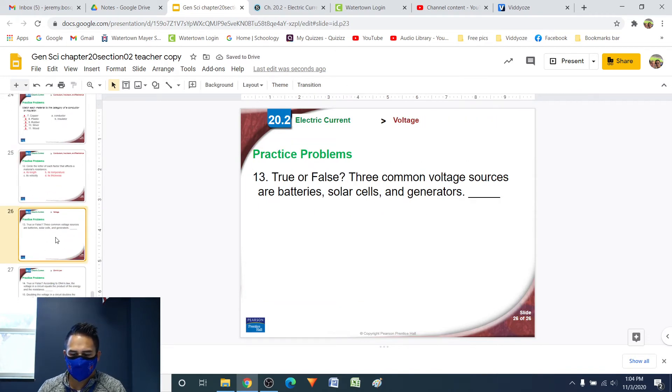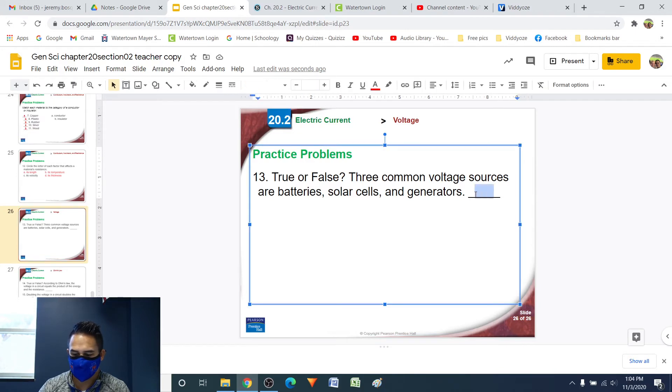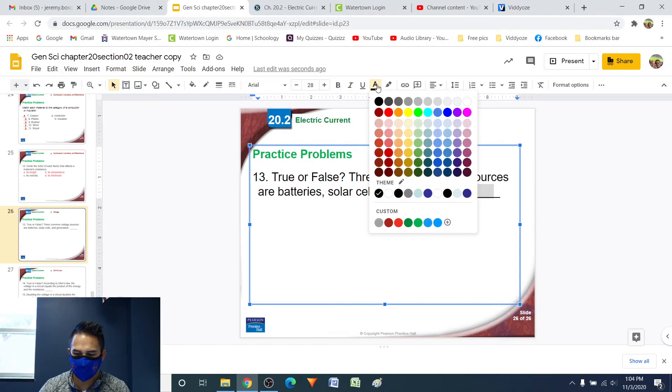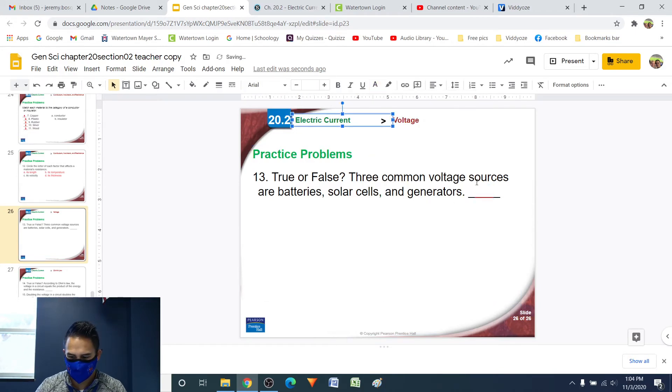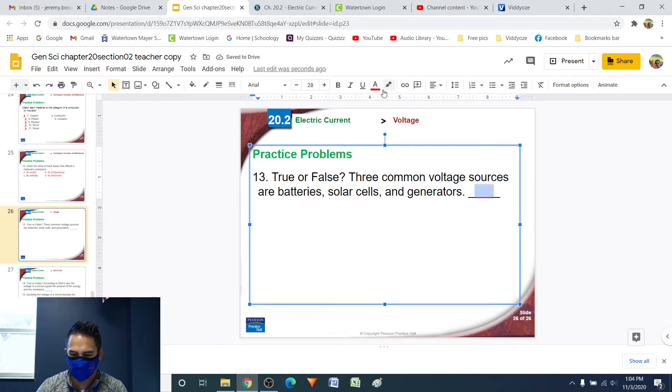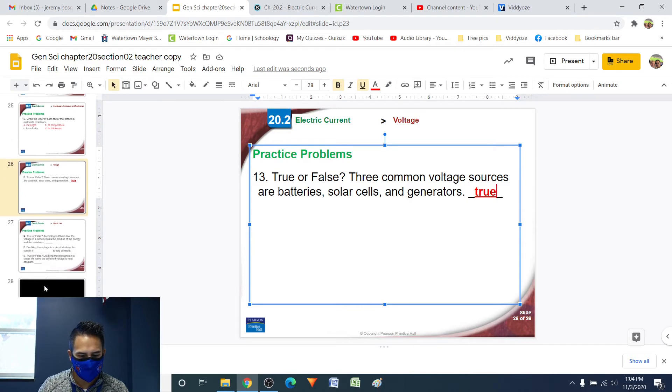Number 13, true or false, three common voltage sources are batteries, solar cells, and generators. So that is directly from the notes. And yeah, that is true. Those are some of the main ways that we can create a voltage is either having some batteries. Solar cells, of course, are going to create energy from the sun, which then we can create a voltage that way. Or generators, of course, will produce energy through friction or other means, and then that will create a voltage.